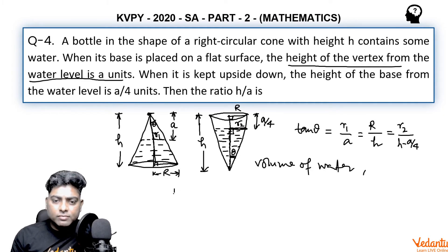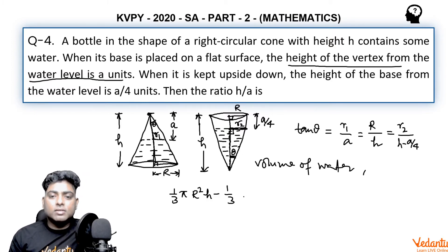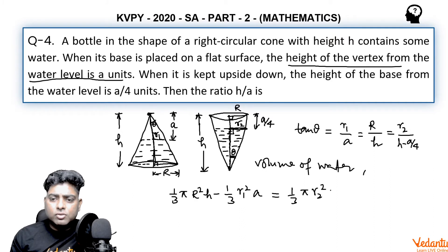Writing the volume of water: in the first case it is 1 by 3 pi R square h minus 1 by 3, the upper vacant cone, the unfilled part, is r1 square into a. From the second figure it is 1 by 3 pi r2 square into the height of water in this case, h minus a by 4.